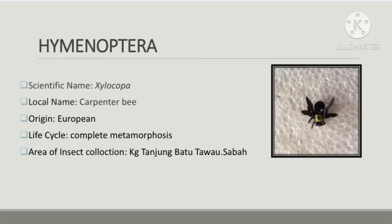Carpenter bees are large black and yellow insects about one inch long. They resemble bumble bees, but the abdomen rear end is black and shiny and does not have the extensive yellow hairs found on bumble bee abdomens. The females can sting but rarely do so unless disturbed. The males cannot sting.